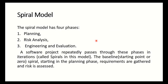The spiral model generally has four phases, though it may vary from four to six. The four phases are: planning, risk analysis, engineering, and evaluation. A software project repeatedly processes through these phases in iteration. If you are using the spiral model you will cycle through these four phases repeatedly.